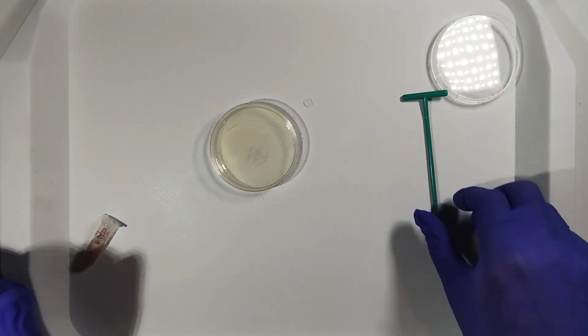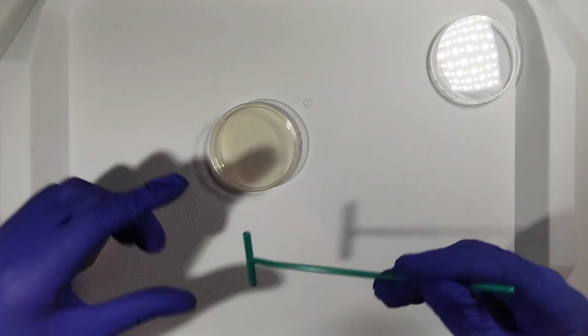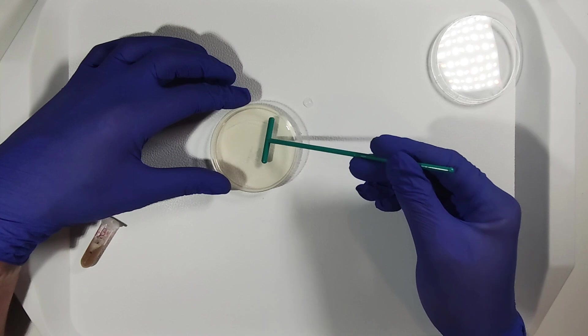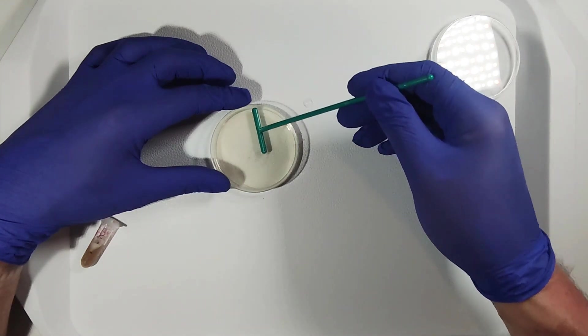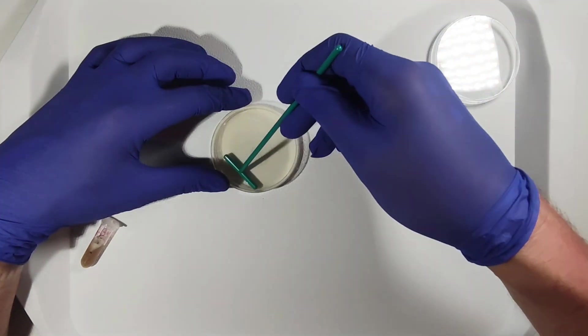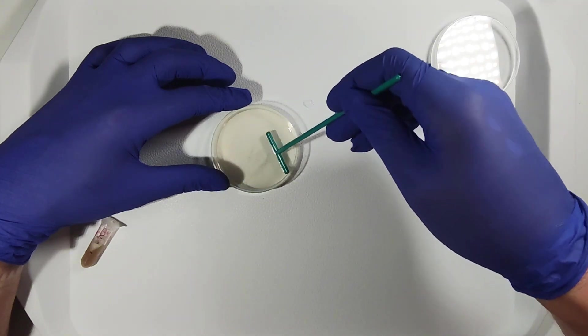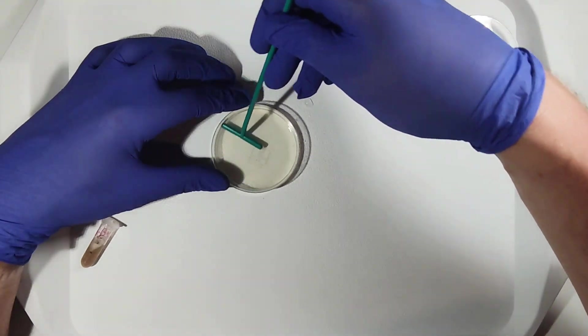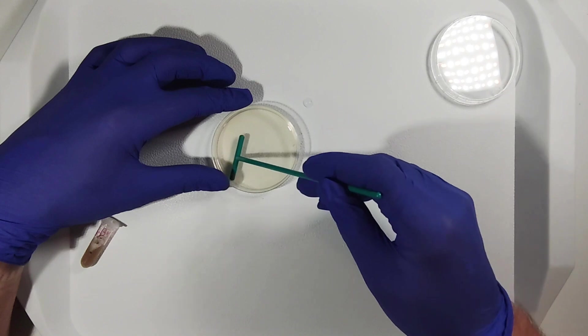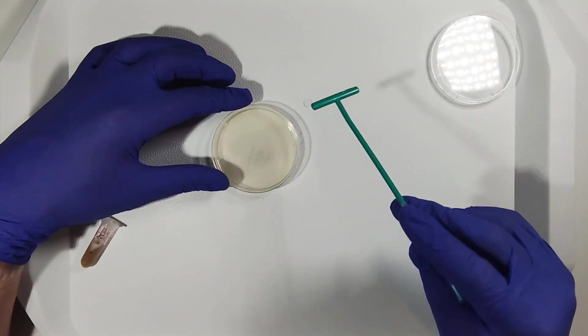We will also use a sterile polystyrene spreader to evenly distribute the sample across the agar surface. This helps to ensure that the microorganisms are spread out properly, allowing for better isolation and analysis of individual colonies.